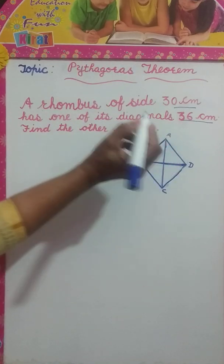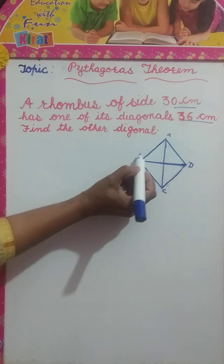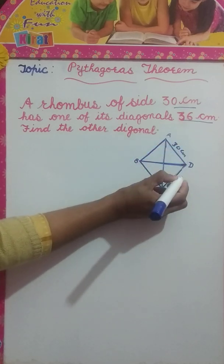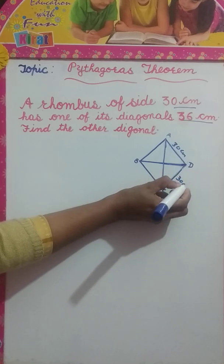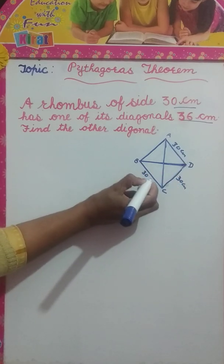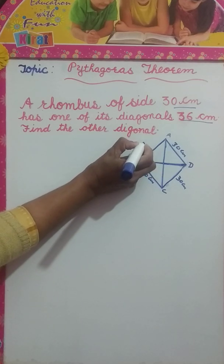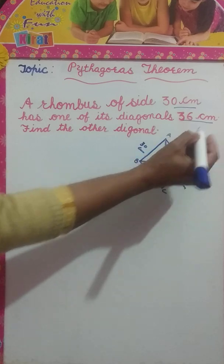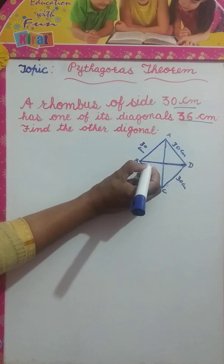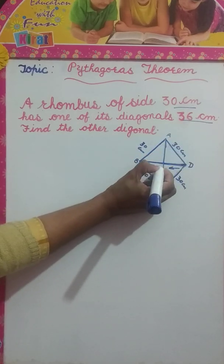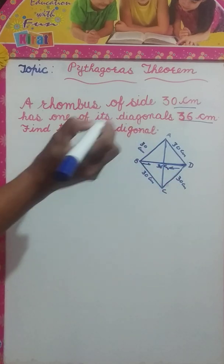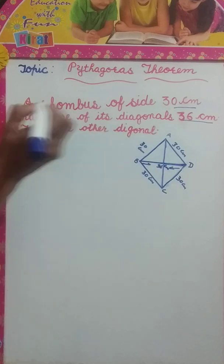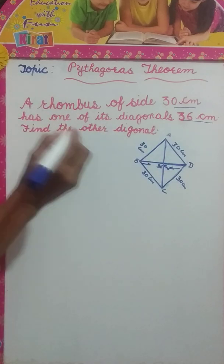A rhombus has all sides equal. So all four sides are 30 cm, and one of its diagonals is 36 cm. We can take this diagonal as 36 cm. Let's start our question.